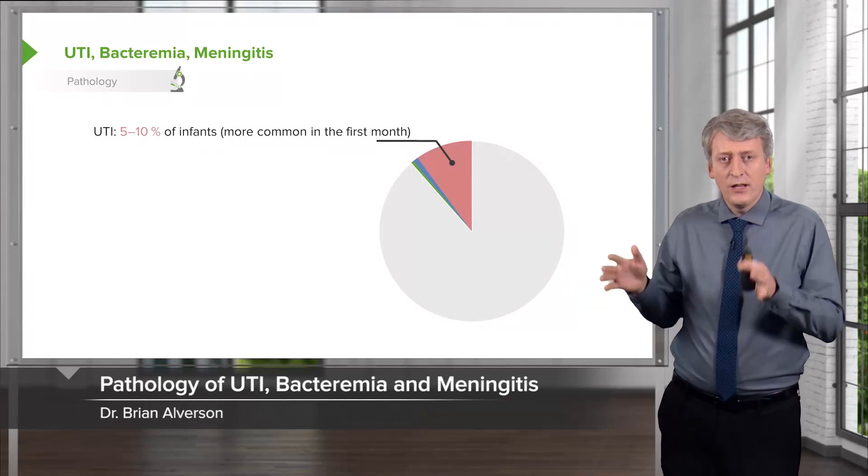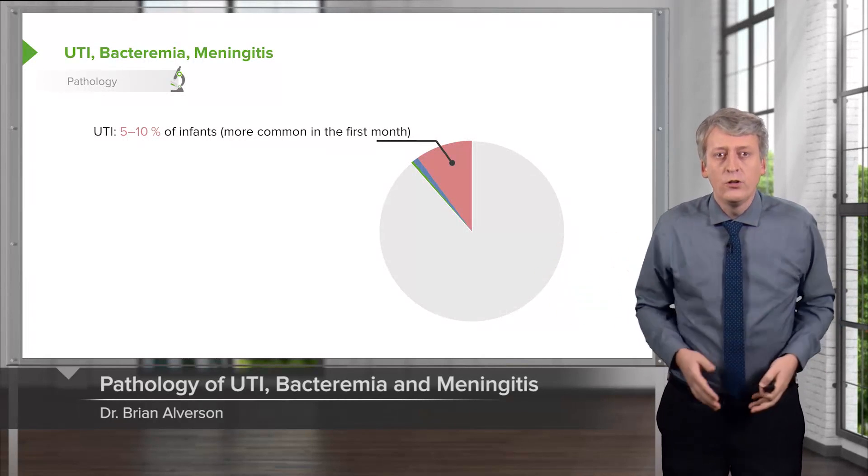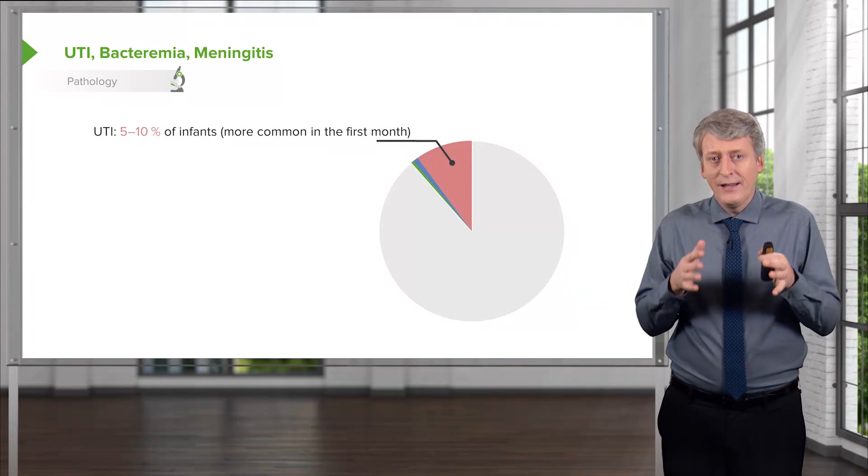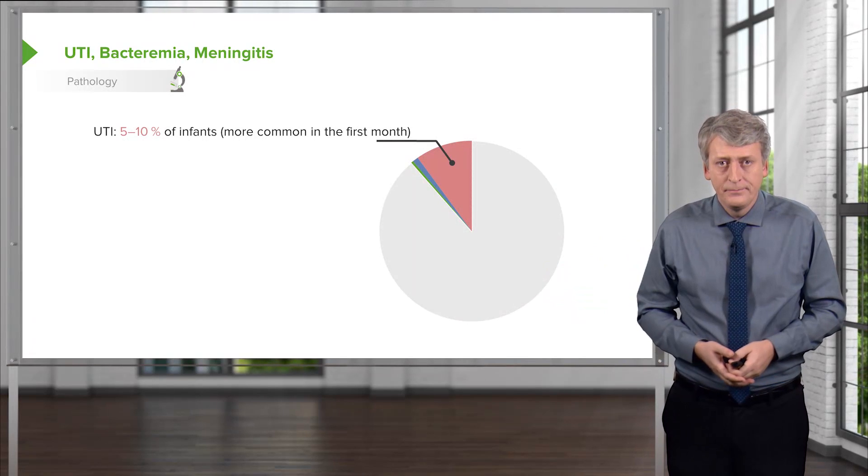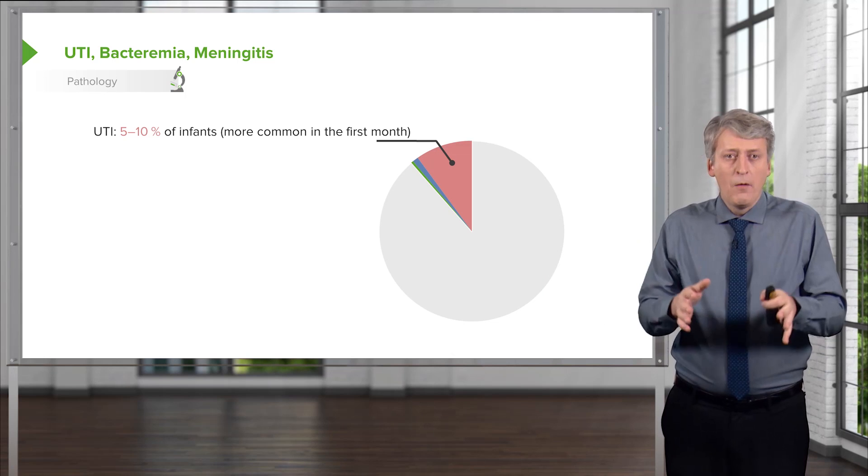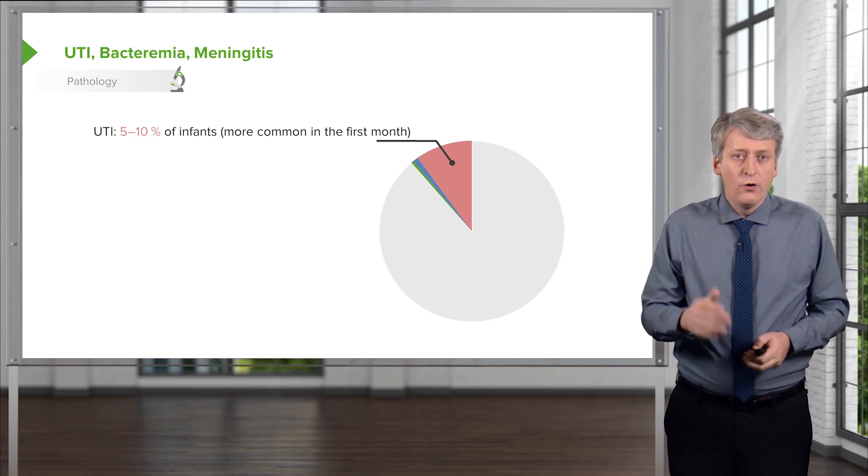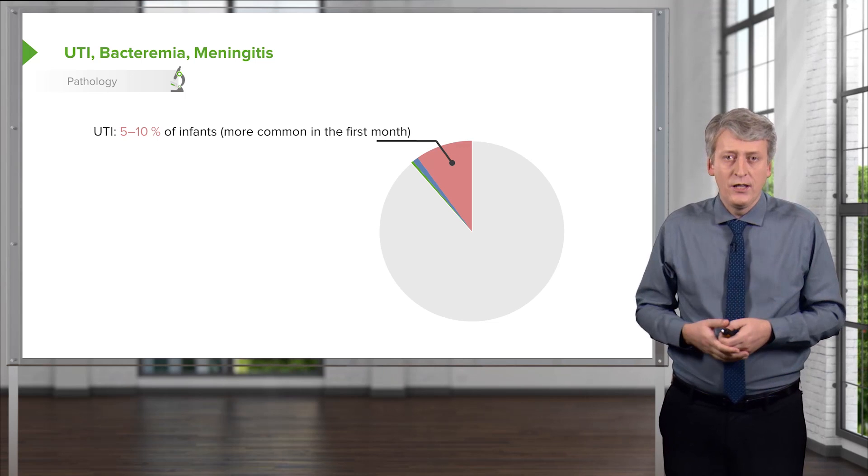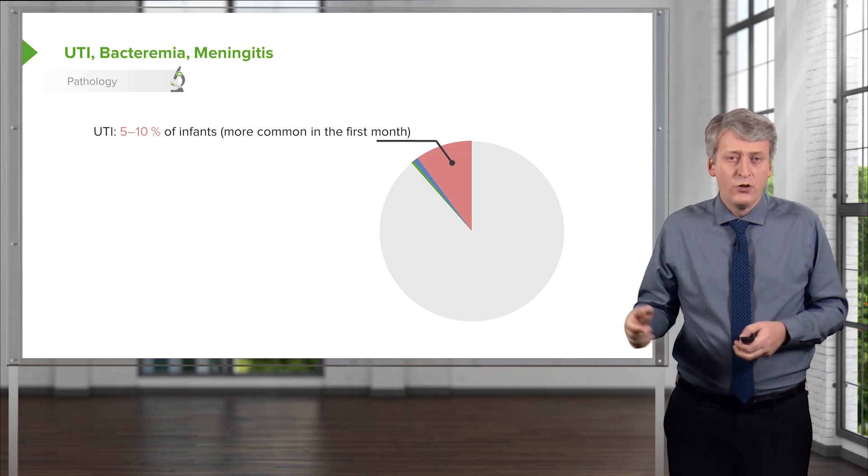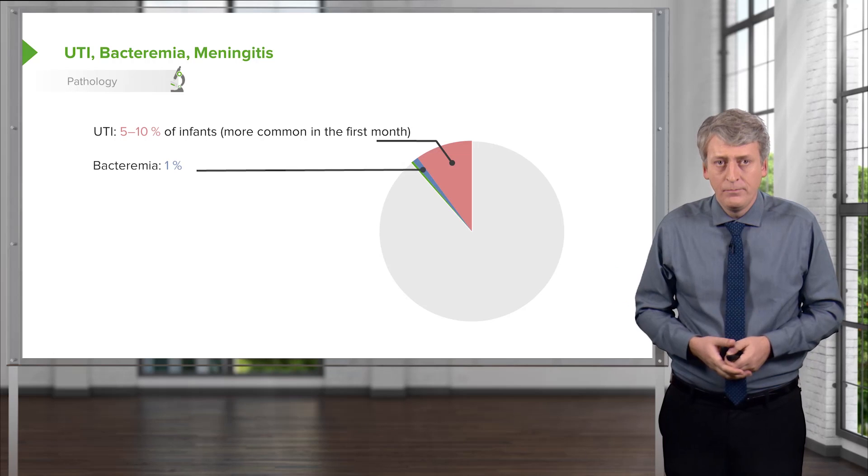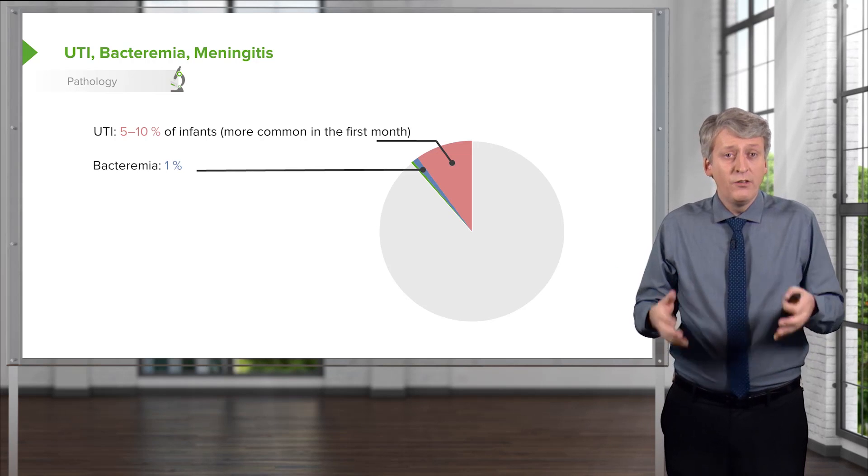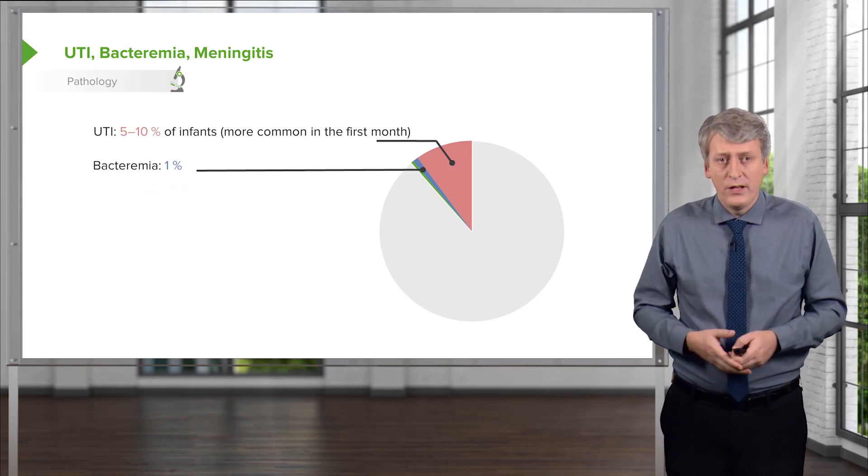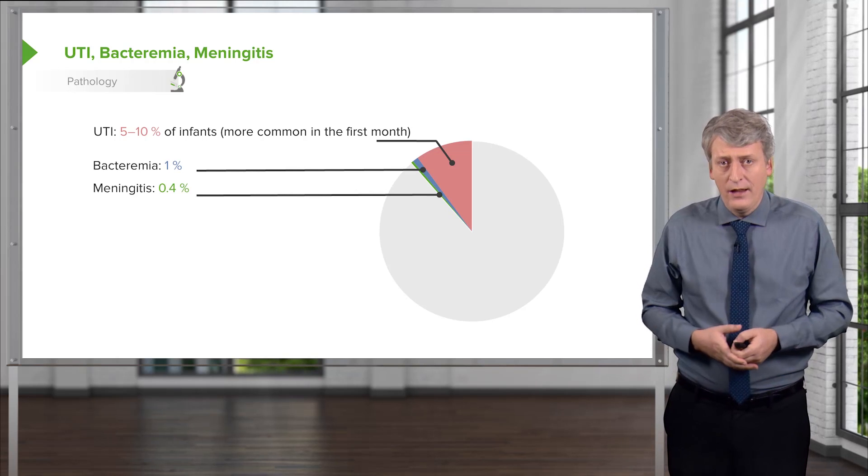Let's get away from HSV because I really want to focus on bacterial causes of children being sick in the hospital with a fever. The most common by far risk is urinary tract infection, and this typically happens between five and ten percent of the time, perhaps ten percent in the first month and five percent after that. Bacteremia is relatively rare, about only one percent of the time, and meningitis is even rarer than that.